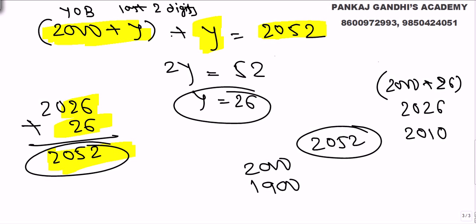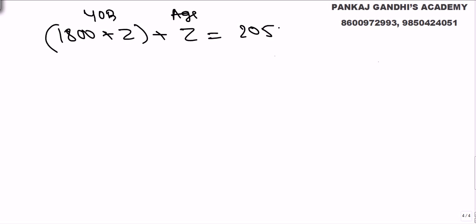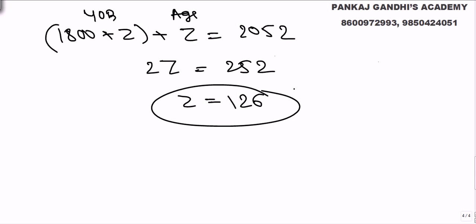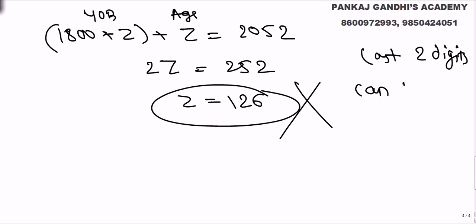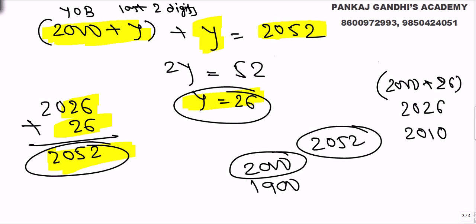Now, why is 1800-something not possible? If I was born in 1800 plus z, with last two digits z, then (1800 + z) + z = 2052, giving 2z = 252, so z = 126. But we know last two digits can only be between 00 and 99 — they cannot exceed that. So 1800s are not possible. Only the present century or the previous century are valid.